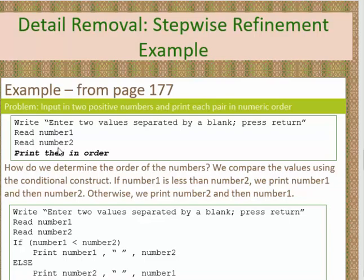The second number will be stored in number2. Notice here in italics, 'print them in order' is not a statement the computer understands — but this is the first phase of stepwise refinement. The next phase focuses on refining this step: how do we determine the order of the numbers? We're going to compare number1 and number2 using what's called a conditional construct, which in programming is called the if statement.